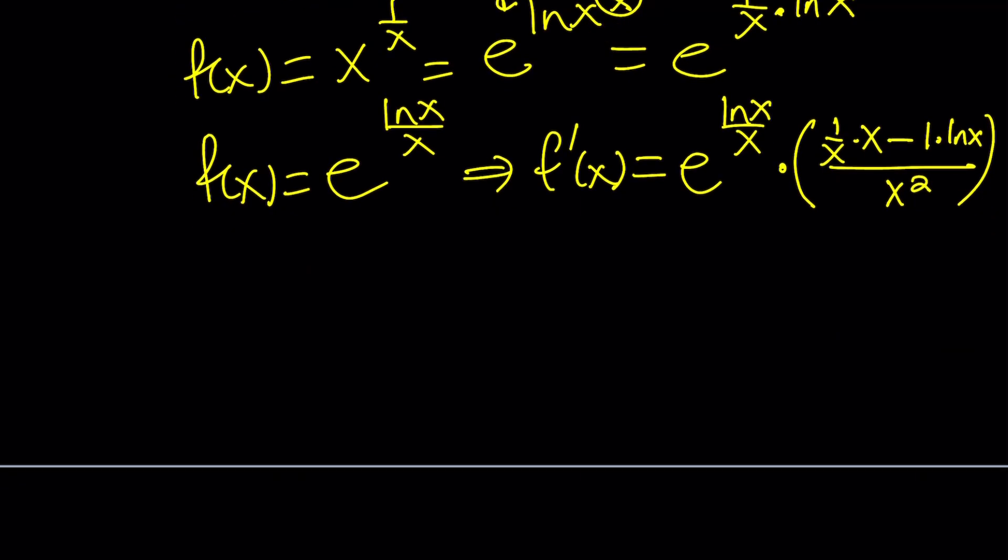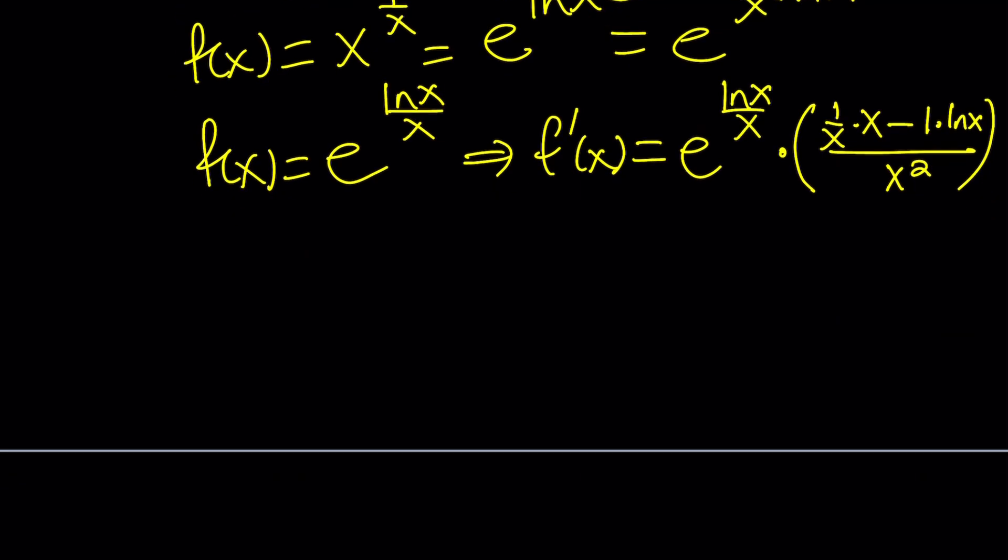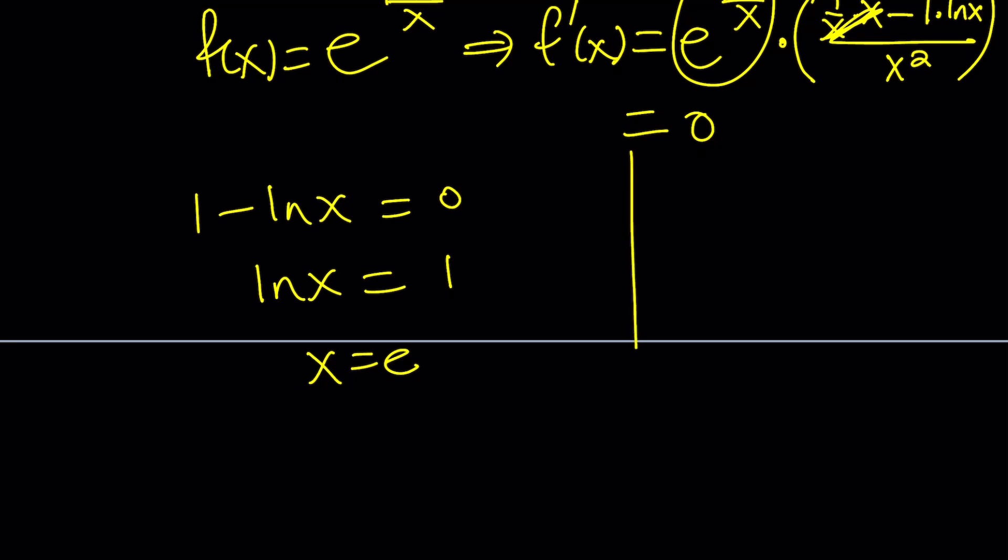Now, when we set f prime equal to 0, obviously, this is not going to be 0 for real x. Even for non-real x, it's not going to be 0 as far as I know. But this can be 0. The numerator, 1 minus ln x, can be 0. And from here, we get ln x equals 1, which means x equals e. So, e is an important point. It's a critical point for our function.